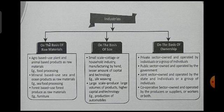On the basis of raw material, industries are of three types: agro-based industry, mineral-based industry, and forest-based industry. Agro-based industry uses plant and animal-based products as raw materials. Examples include food processing items like aloo bhujia, namkeen, Lays, and Uncle Chips — these are examples of agro-based industry.